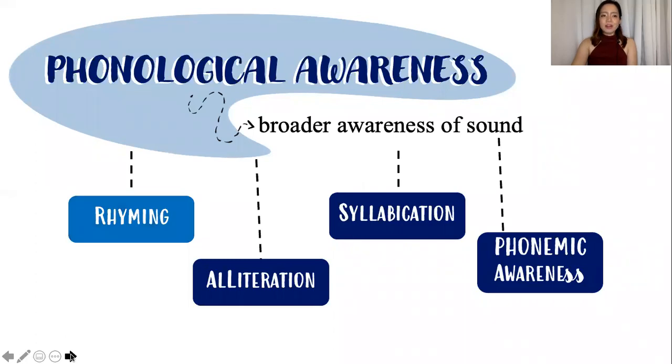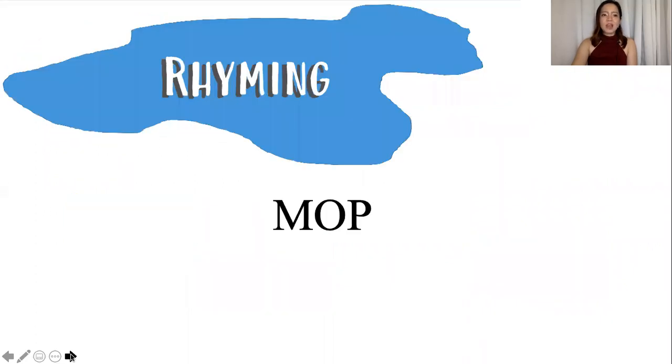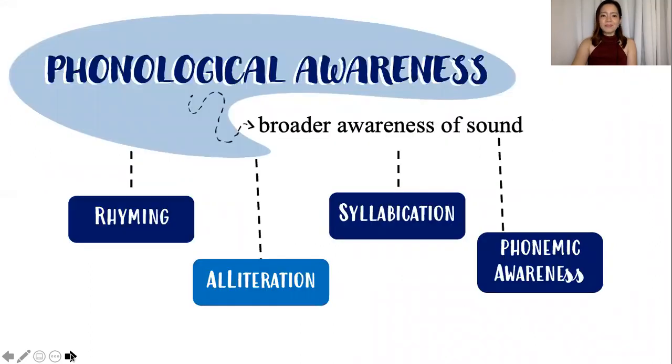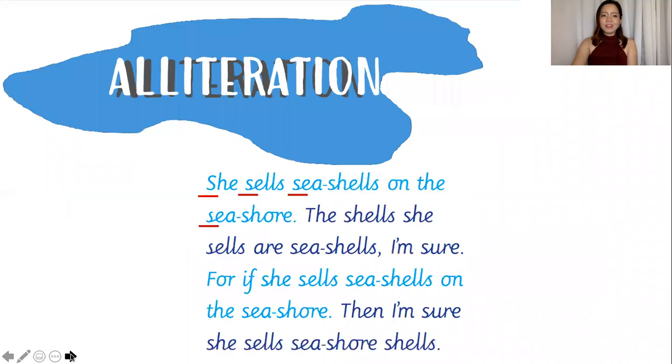Let's start with rhyming. Let's have a little exercise. What word rhymes with mop? And this develops phonological awareness. So, the answers are top, pop, cup, hop, and stop. Let's go with alliteration. Alliteration is a series of words that begin with the same consonant sound, such as this example. I bet some of you are familiar with this example.